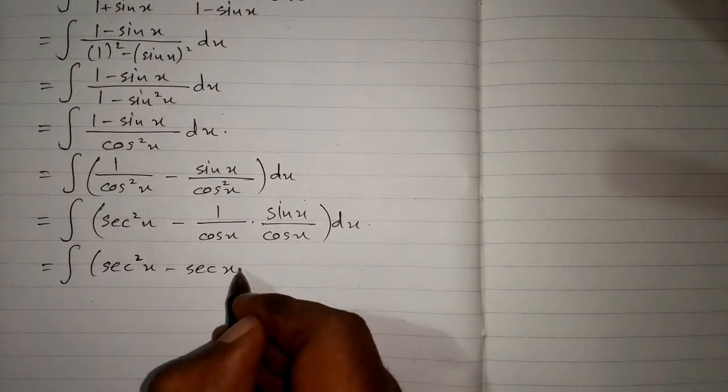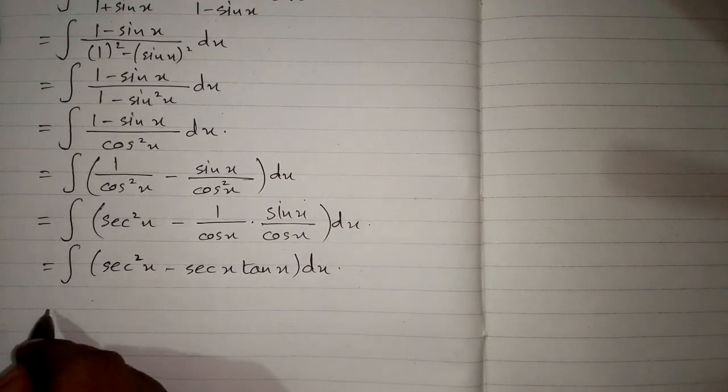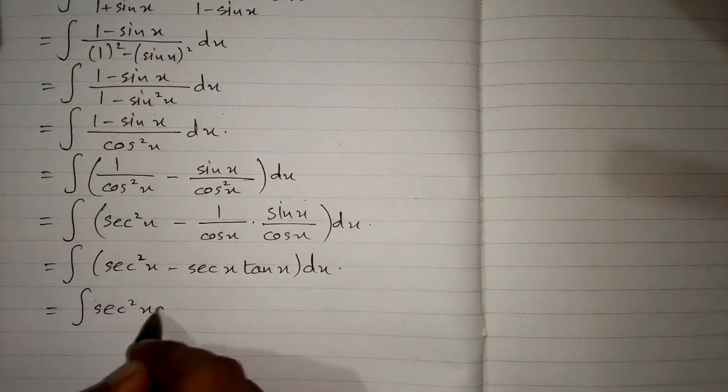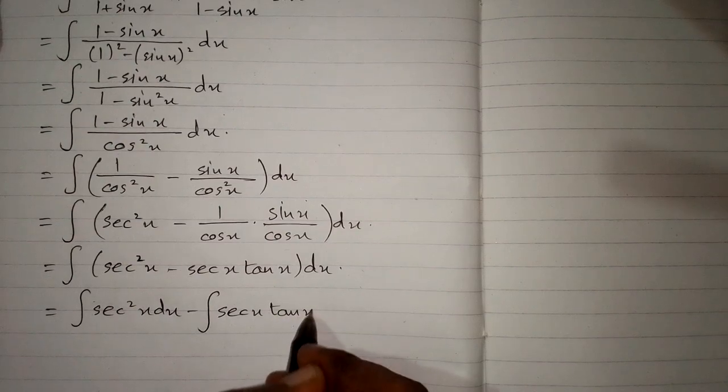1 upon cos x is sec x and sin x upon cos x is tan x. Now we will apply integral on both terms. So we have integral of sec square x minus integral of sec x tan x.